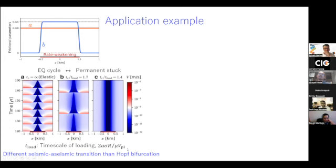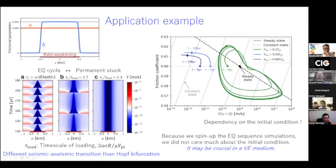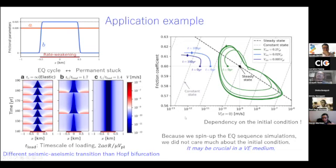Another interesting finding is the dependency on the initial condition. Looking at trajectories at the center of the patch — where the horizontal axis is slip rate and the vertical axis is friction relative to shear stress — we have a repeating earthquake solution attractor. But if the initial condition is too far from that, the system gets stuck. This initial condition dependency is a significant problem because in elastic earthquake sequence simulations we often spin up the system without caring much about initial conditions, but it may be crucial in a viscoelastic medium.